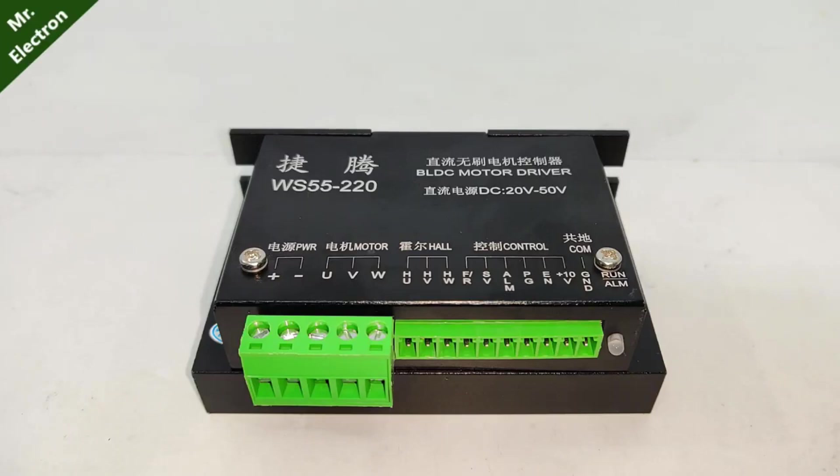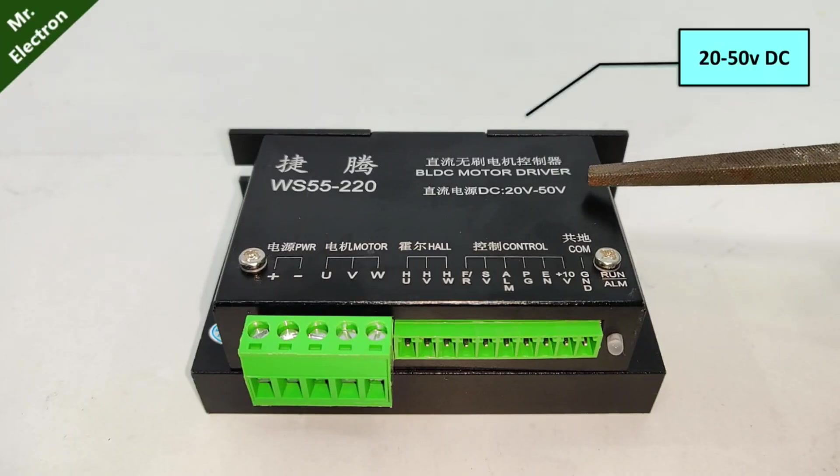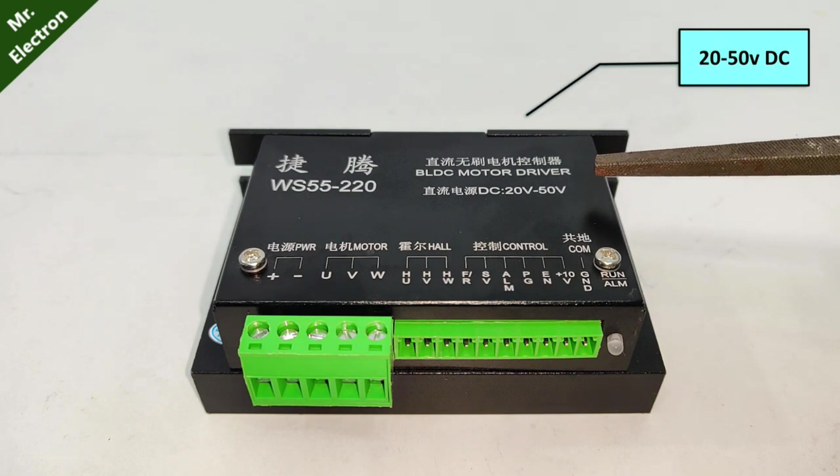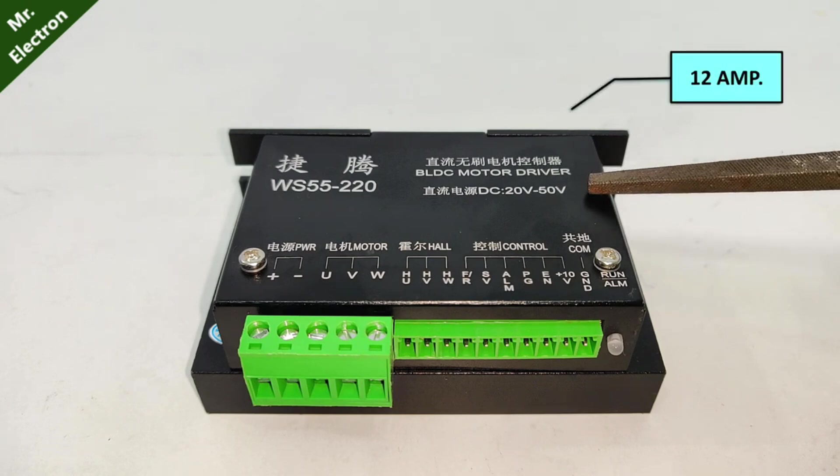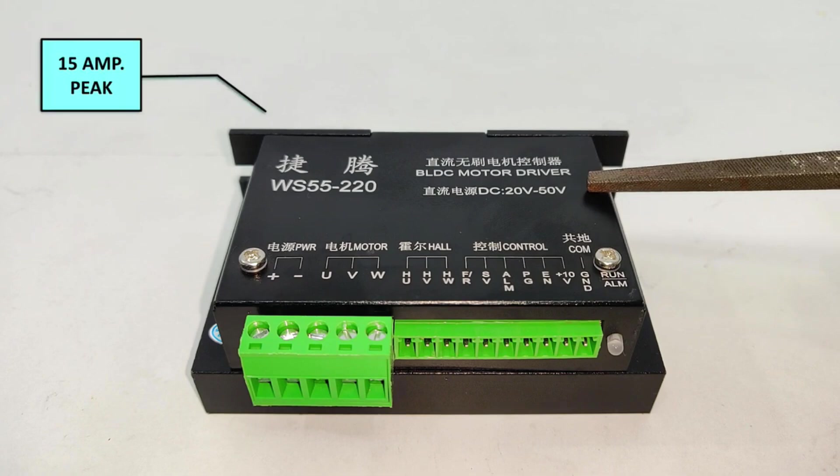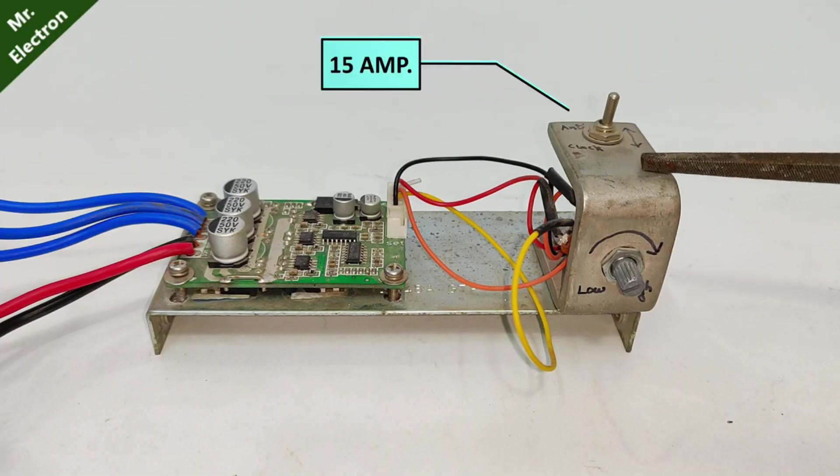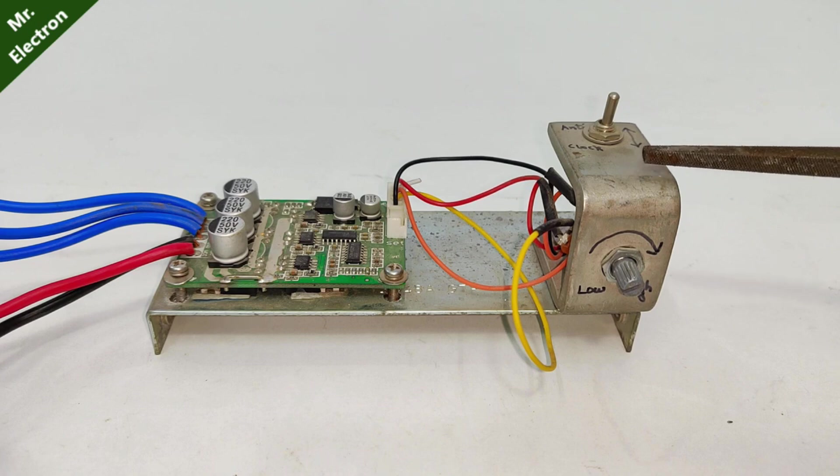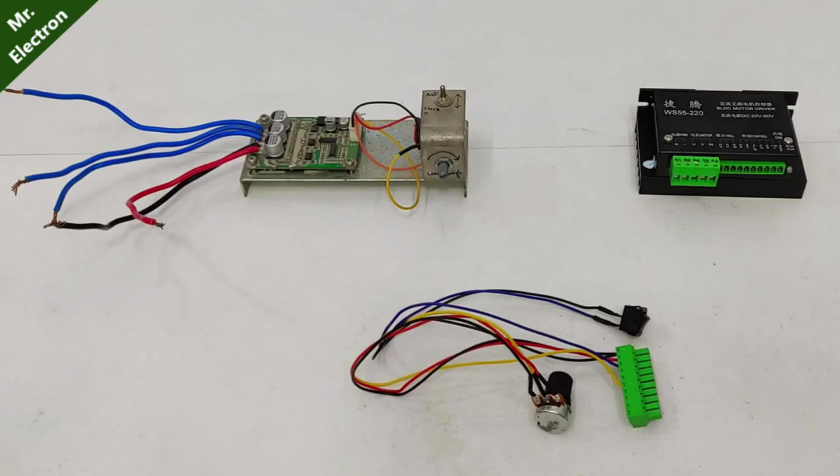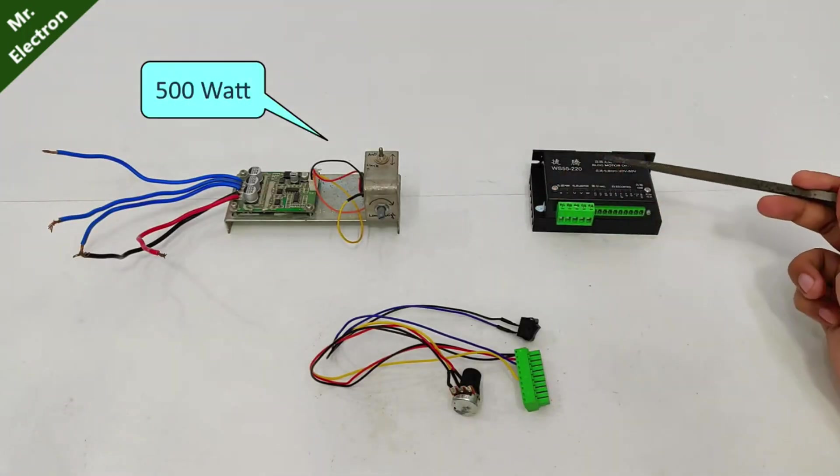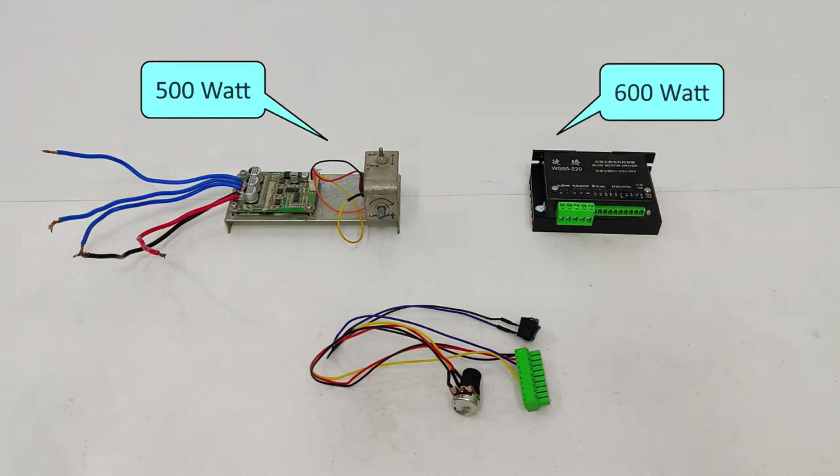Now this controller ranges from 20 to 50 volts DC and up to 12 amperes which is rated and 15 amperes is the peak. While this one is rated for 15 amperes but the voltage rating is only 12 to 36 volts DC. And finally comes the power capability. This one is 500 watts and this one is 600 watts.